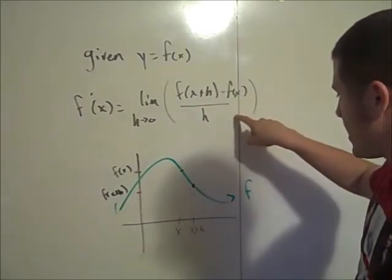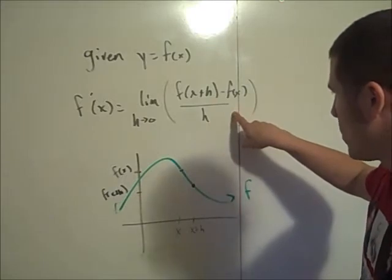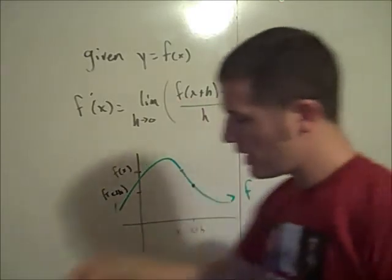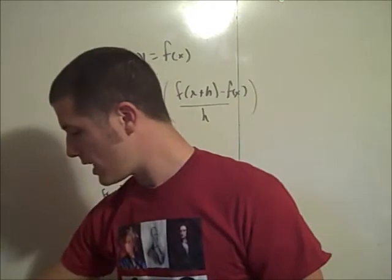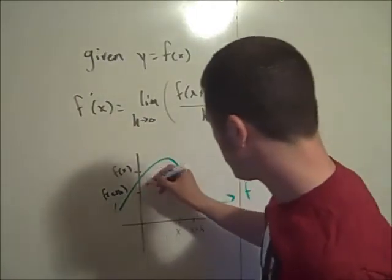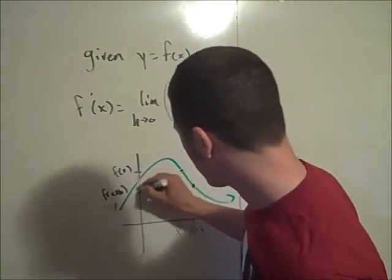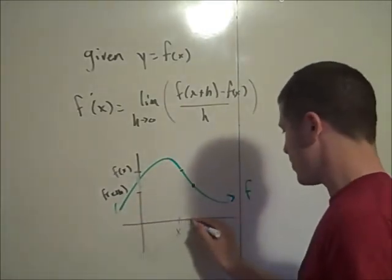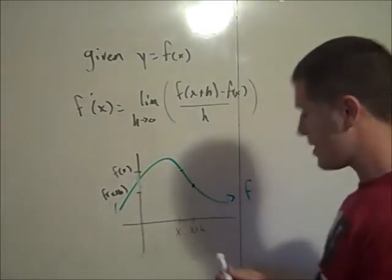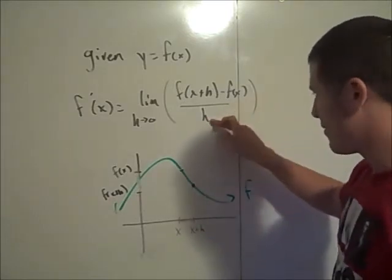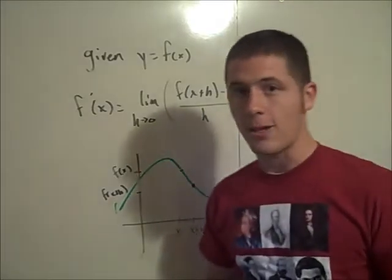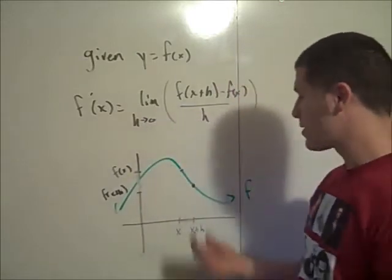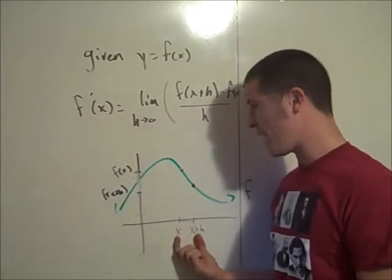What does this thing really represent? f of x plus h minus f of x is just the distance between these two y values, and h is just the difference between these two x values. So this is a difference in y values divided by a difference in x values, which is a slope — the average slope over this interval from x to x plus h.